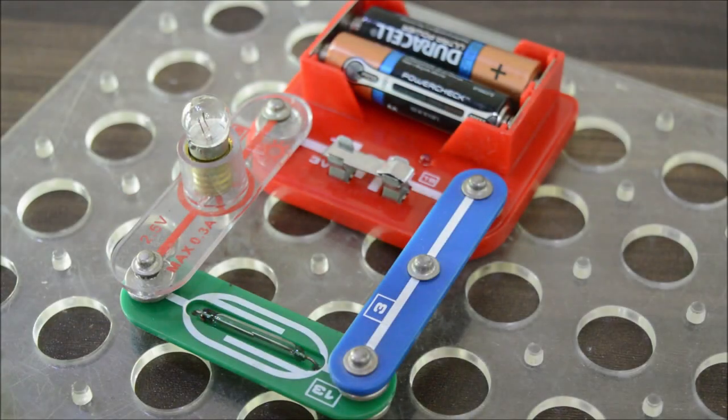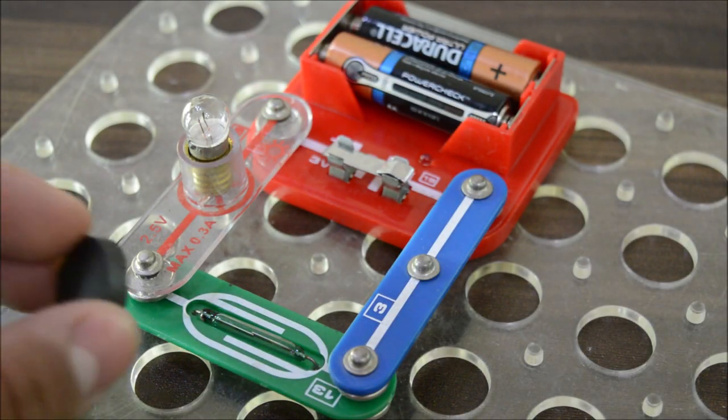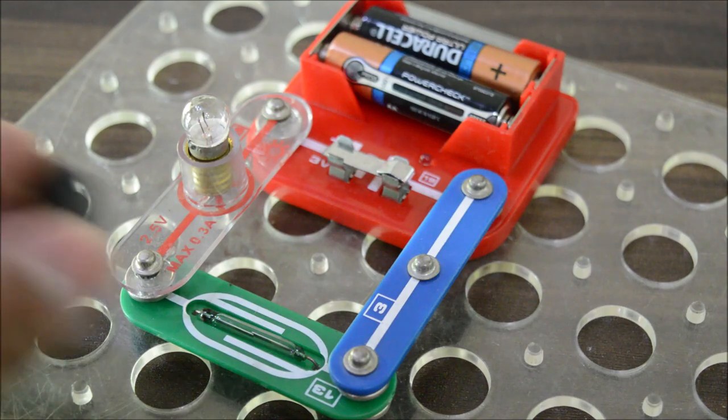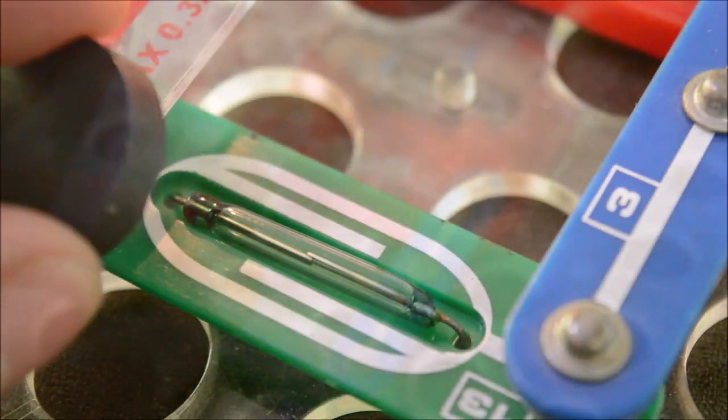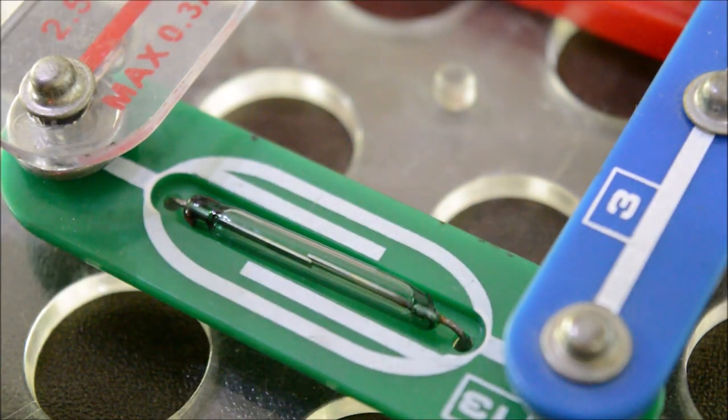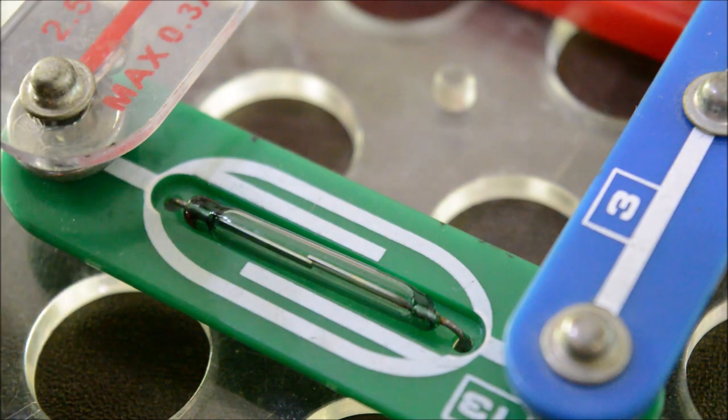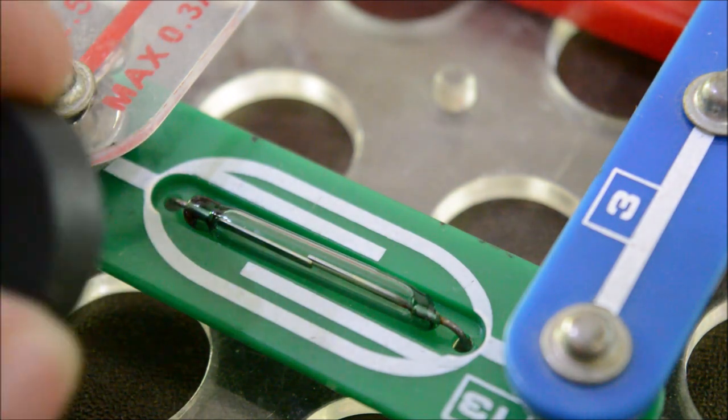A reed switch is basically a magnetically operated switch. When a magnet comes close to it, the two contacts inside of it join together, which completes the circuit and the power can be supplied to the bulb.